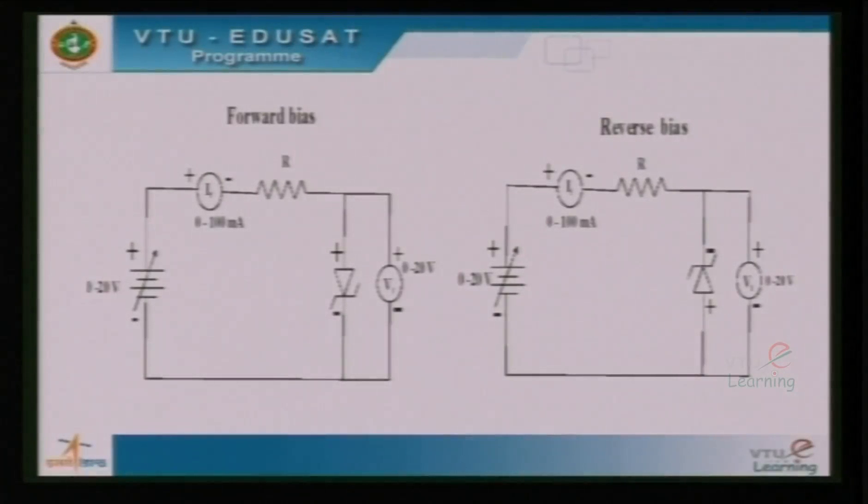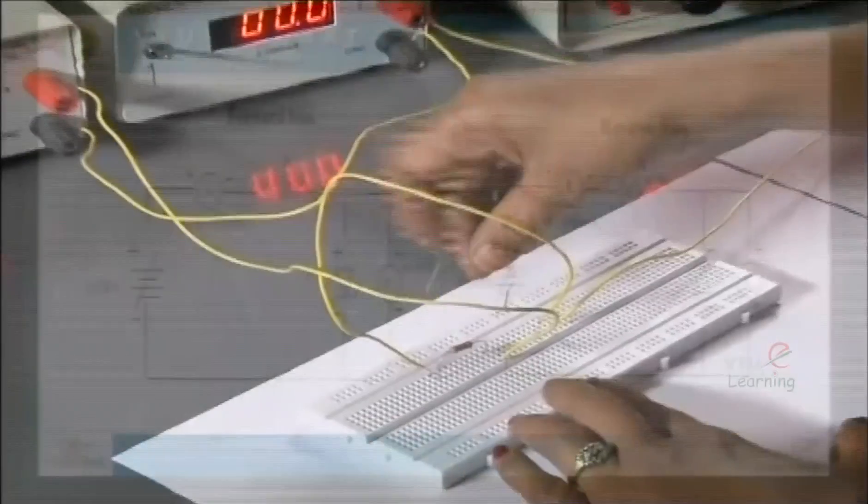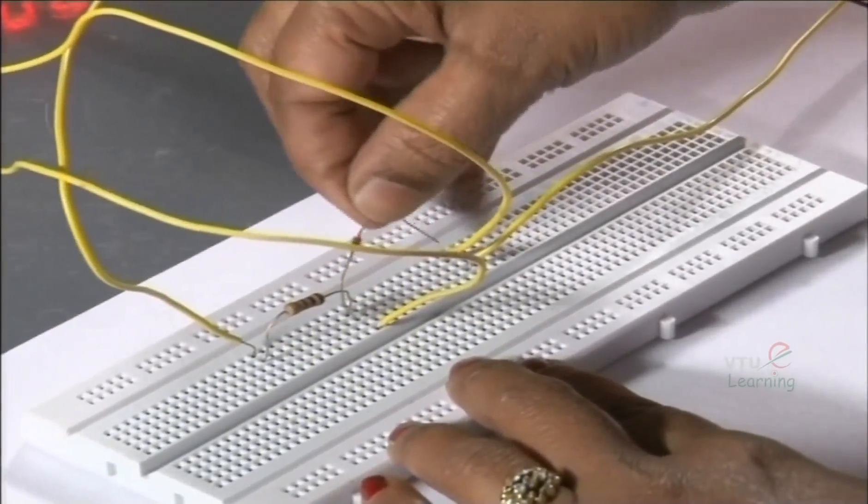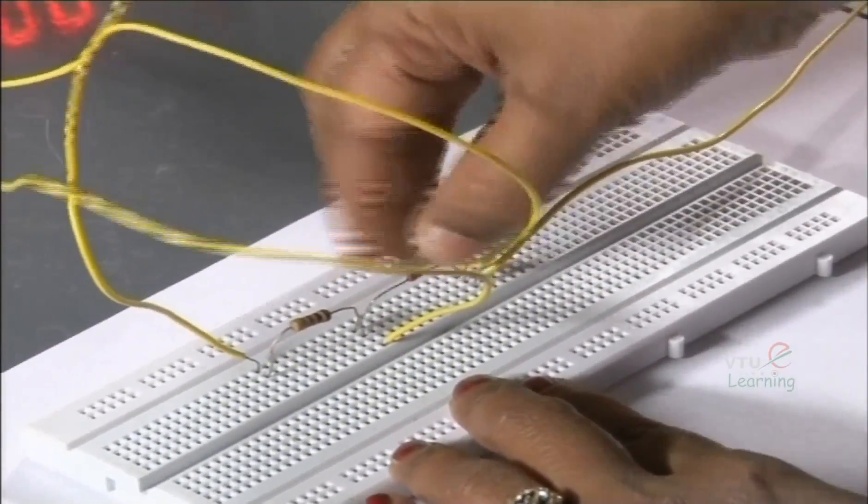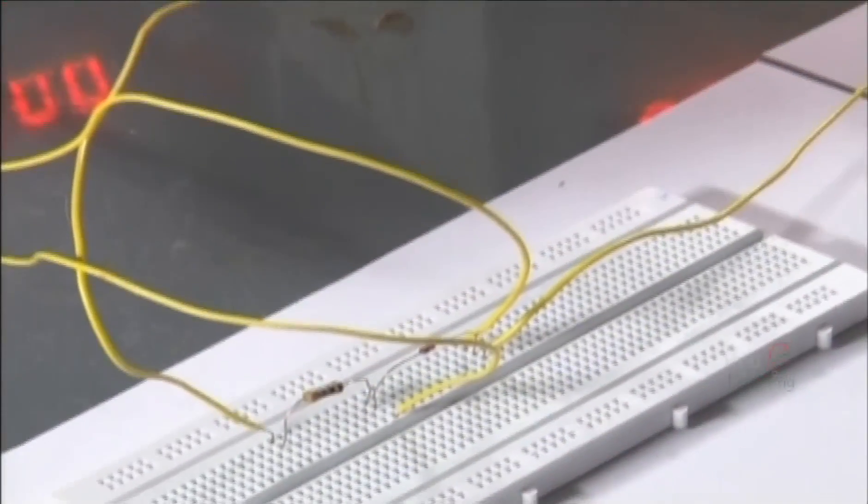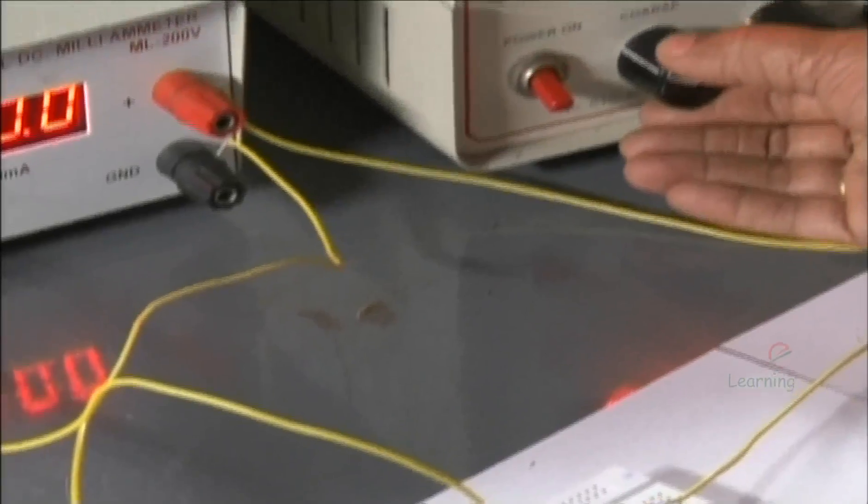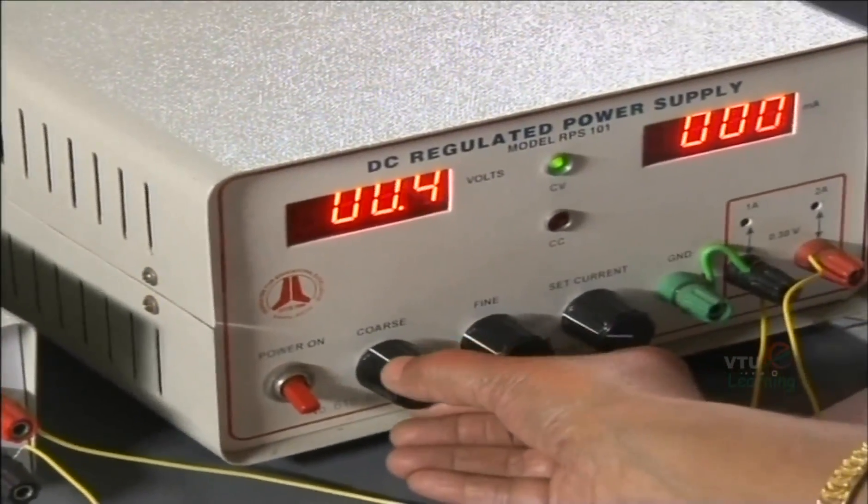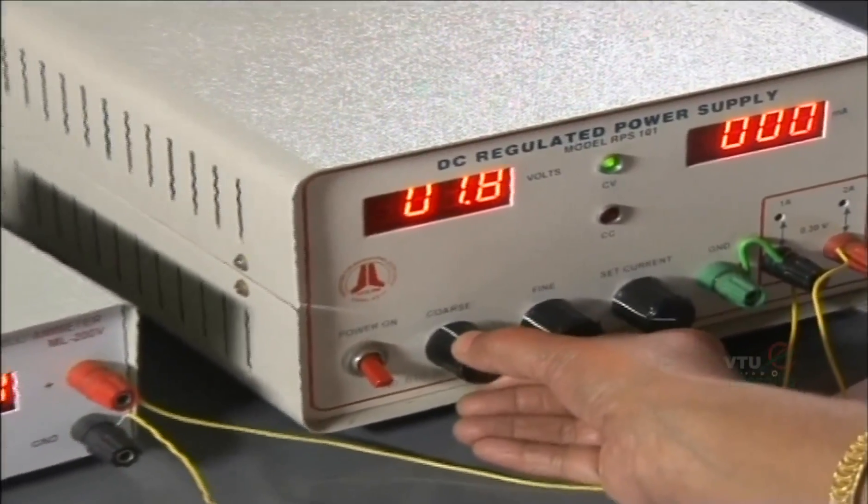Let us change the mode, reverse the terminals of the zener diode. Repeat the process of increasing the voltage but now the voltage is increased in steps of 1 volt.